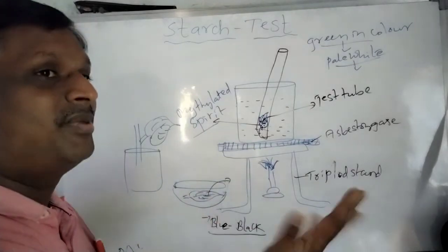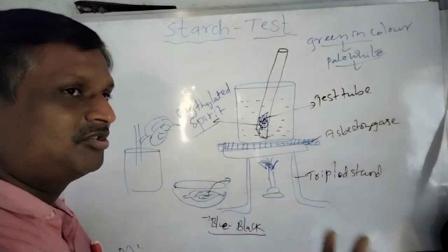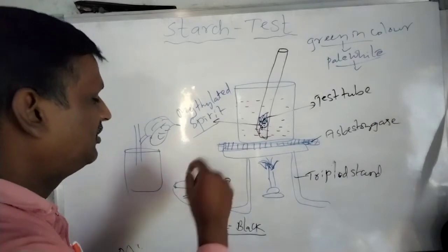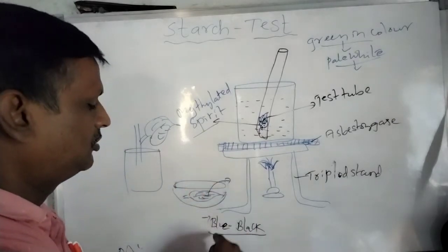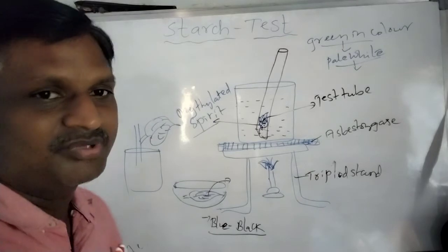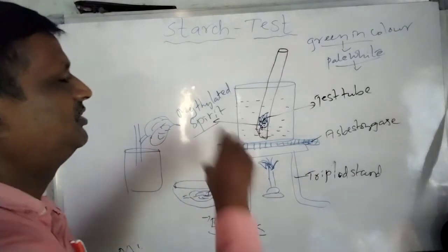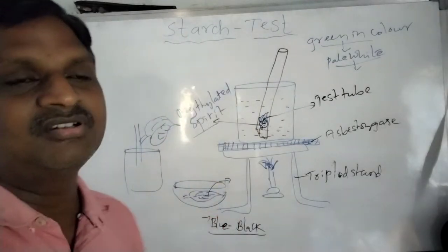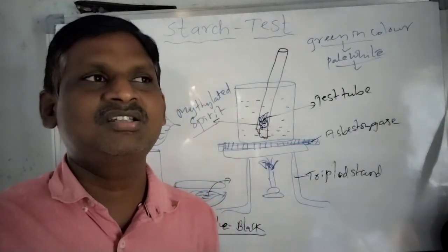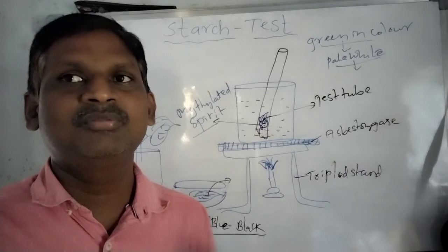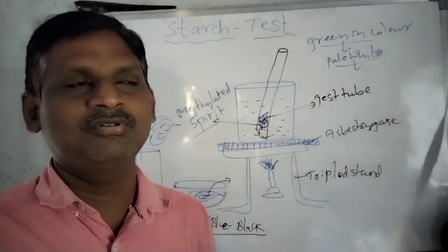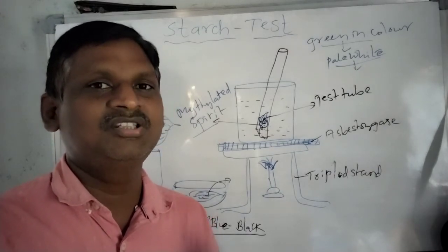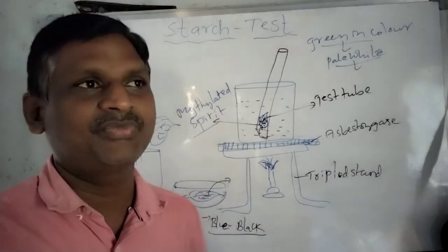Note that iodine and betadine are synonyms — both can be used interchangeably. When iodine or betadine is poured on the pale white leaf, it turns blue or black, indicating the presence of starch. This is the test for knowing about the presence of starch. In an examination, if asked what reagent is used to test the presence of starch, the answer is iodine or betadine.